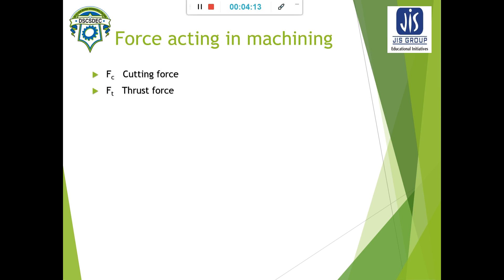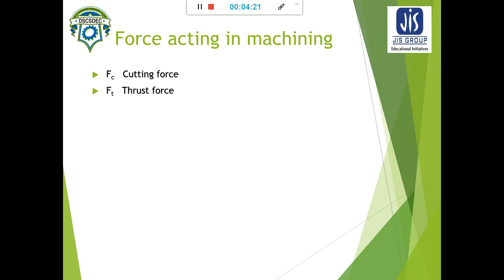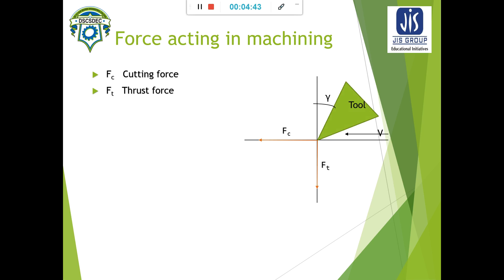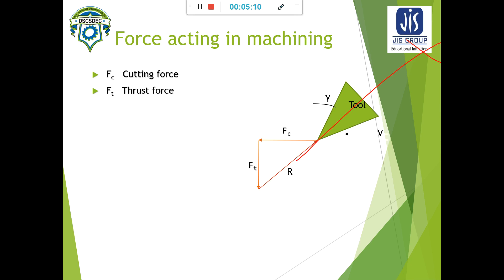What are the forces acting in machining? First, cutting force Fc and thrust force Ft — these two forces act during machining and can easily be measured using a dynamometer. At the tool-chip-workpiece interface, the cutting force Fc acts in the direction of the cutting speed v, and Ft is the thrust force, normal to Fc. The resultant R of these two forces can then be drawn.